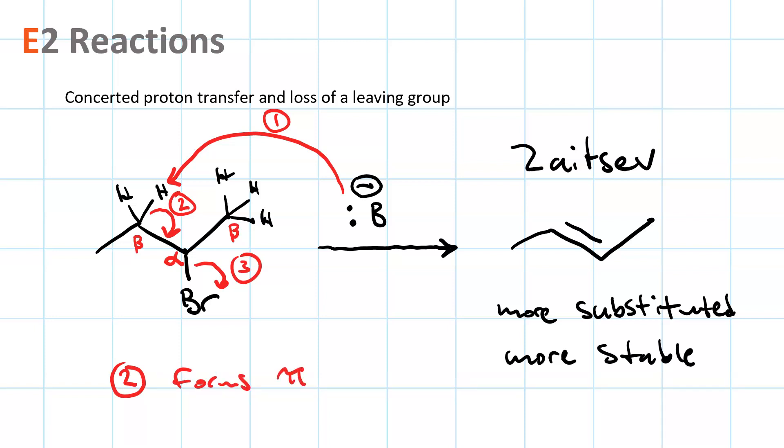The pair of electrons that forms the pi bond in the product, this pi bond here, starts out as a sigma bond between the beta proton and the beta carbon. That's why proton transfer is important, and that's why your reagent has to be a strong base.